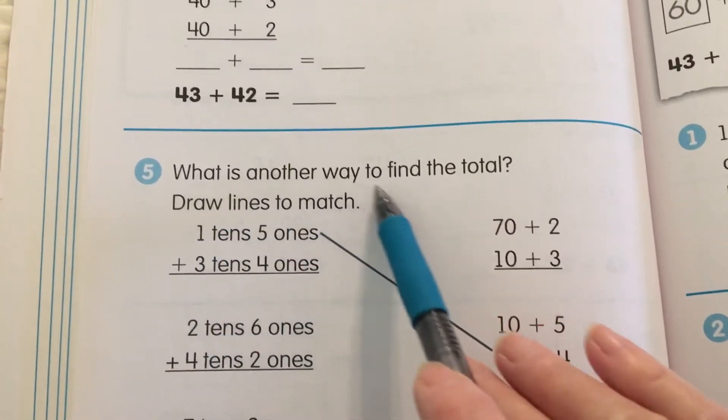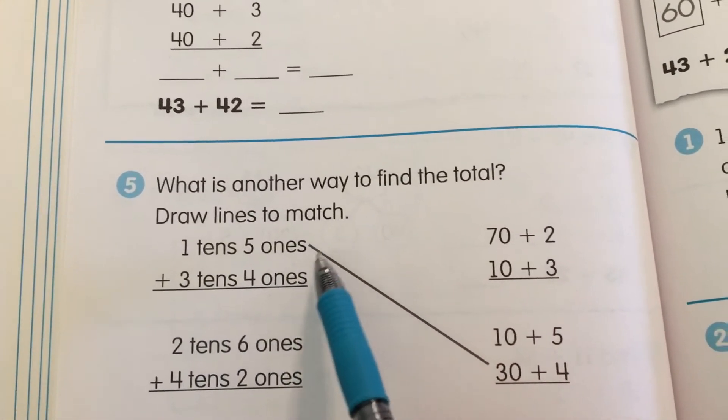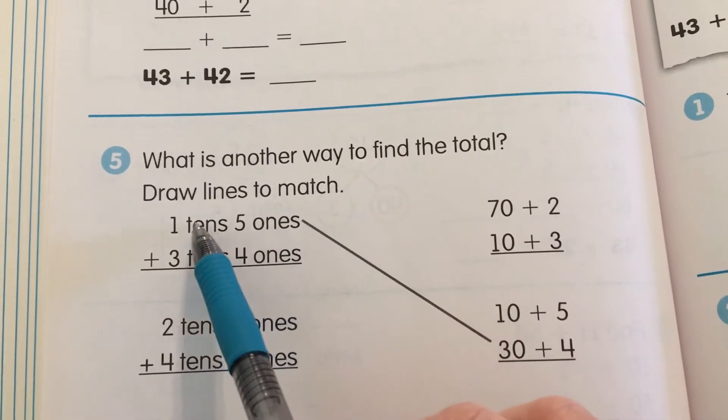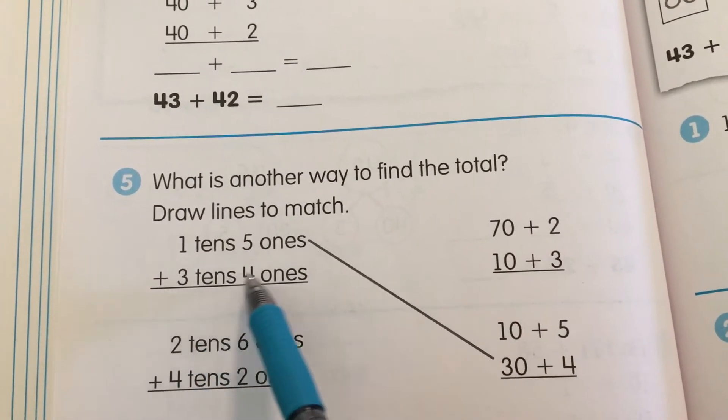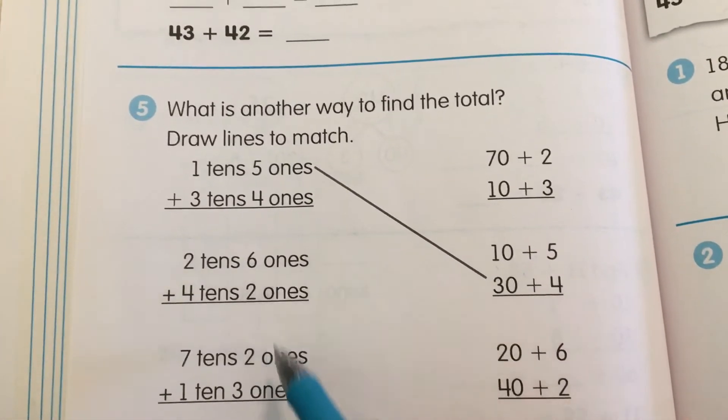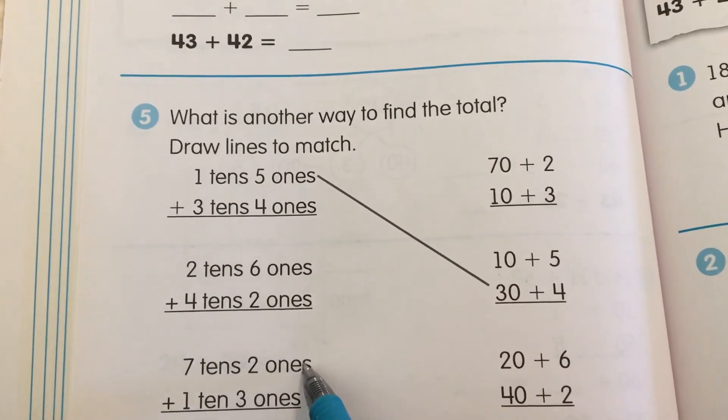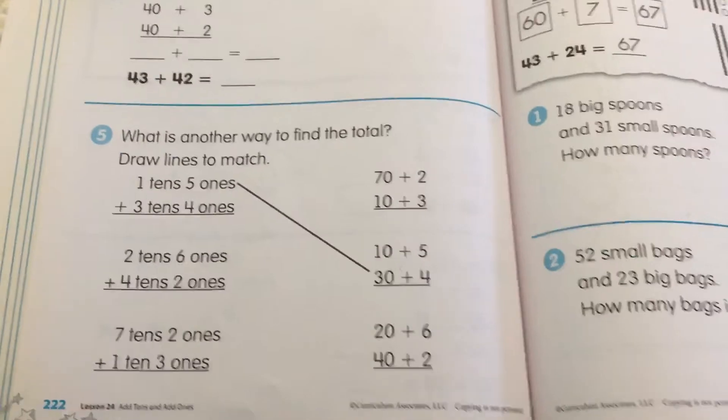Now, what is another way to find the total? We're going to draw lines to match. So here's 1 10 and 5 1's, 3 10's and 4 1's, 30 plus 4. So there we know that that one matches. So you're going to match these other two. Look for your numbers. Okay? All right.